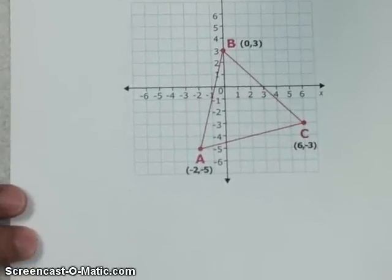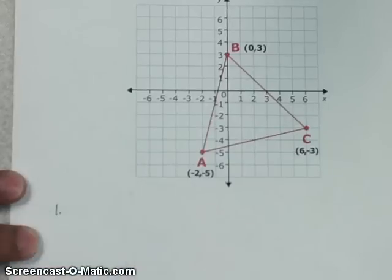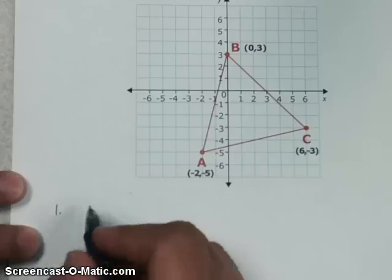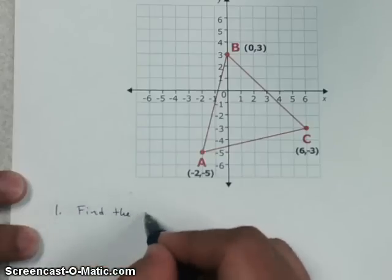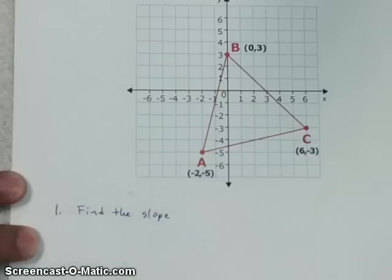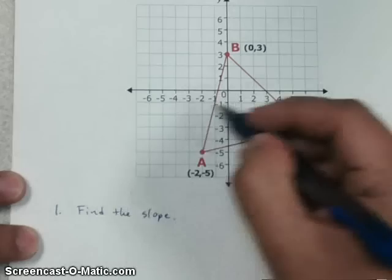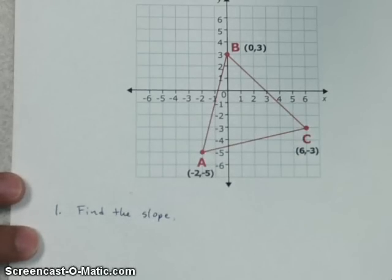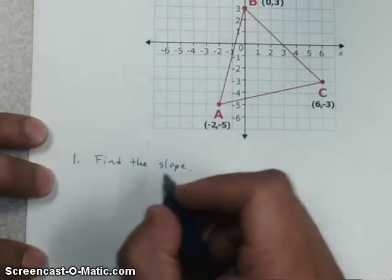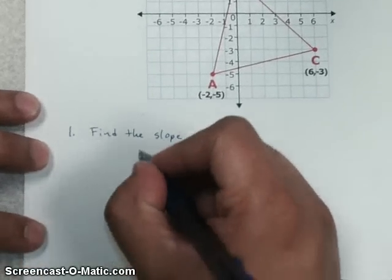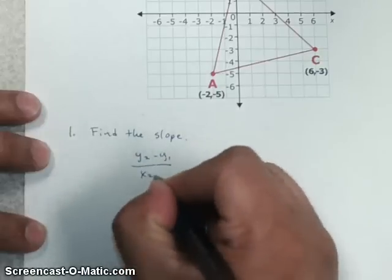So for this one, the first step that we need to do is to find the slope of a side. It doesn't matter which side we use. I'm going to start with this side AC. So remember the slope formula is going to be Y2 minus Y1 over X2 minus X1. So I'm going to use these two points A and C and find the slope.